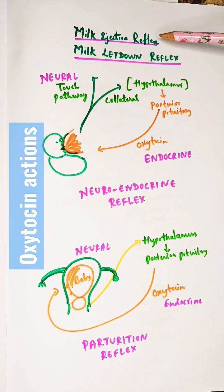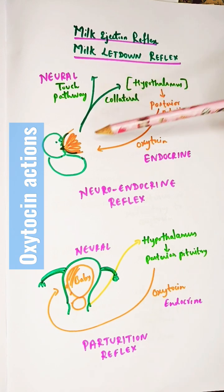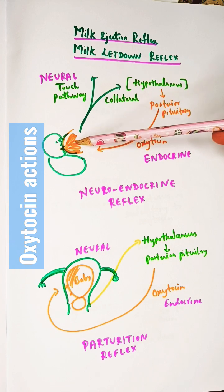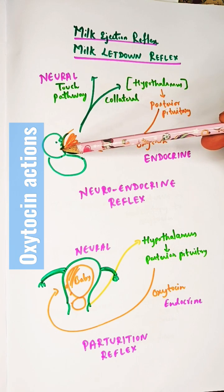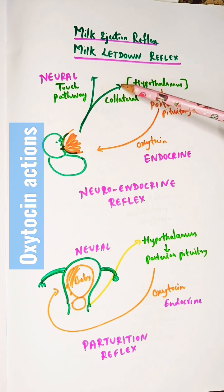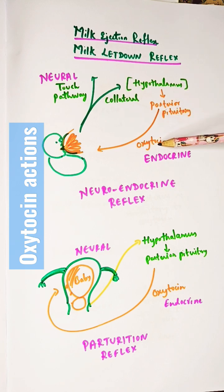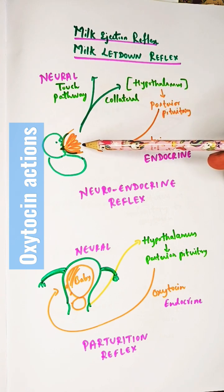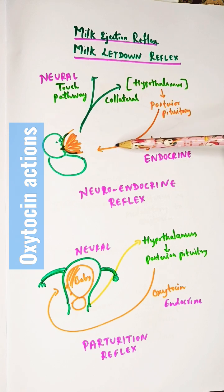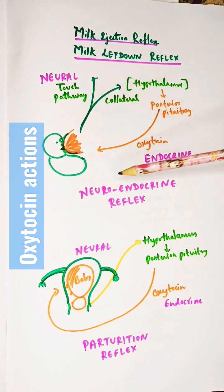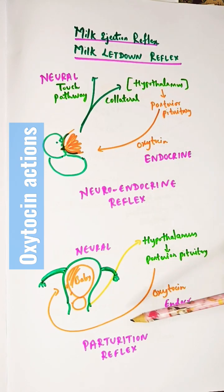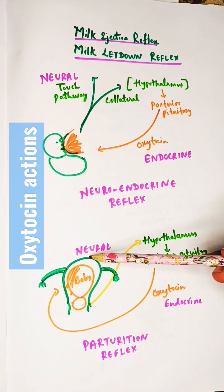Oxytocin has two main actions: the milk ejection reflex and the parturition reflex. When the baby suckles at the breast, touch receptors in and around the areola and nipple get stimulated. This signal travels via a touch pathway that gives a collateral to the hypothalamus, which stimulates the posterior pituitary to release oxytocin. Oxytocin causes contraction of myoepithelial cells in the mammary gland, resulting in milk release. This involves a neural pathway and an endocrine pathway, making it an example of a neuroendocrine reflex.